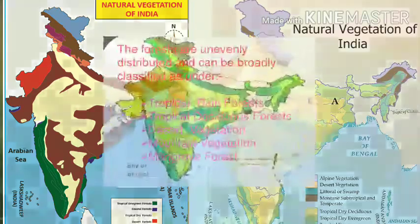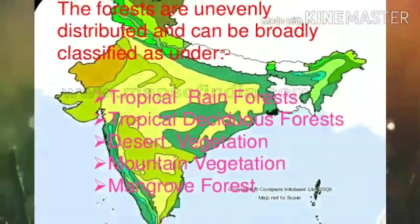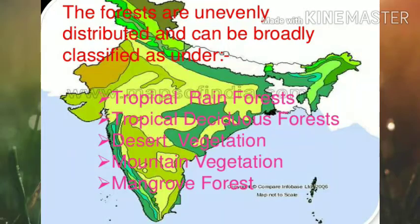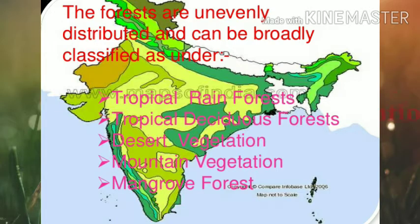The natural vegetation of India can be divided into five types. They are tropical evergreen forest, which is also known as tropical rainforest, tropical deciduous forest, desert vegetation, mountain vegetation and mangrove vegetation.